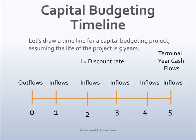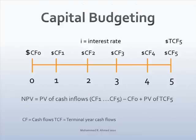Let's draw a timeline for a capital budgeting project, assuming the life of the project is 5 years. Cash outflows are posted on the left-hand side at period 0. The cash flows are negative because money is going out of the company. Cash flows generated from the project are referred to as cash inflows and occur after the investment. They are positive because money is coming into the firm. Assuming that the equipment can be salvaged, the salvage value and any other end-of-year cash flows are posted on year 5.